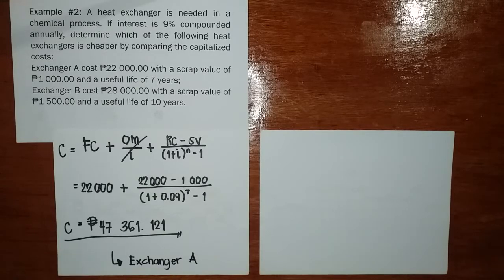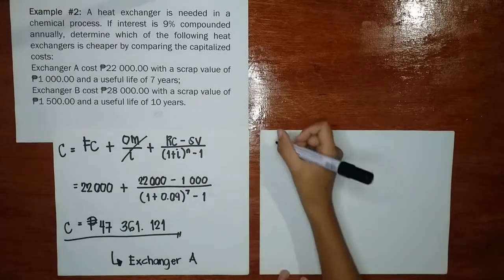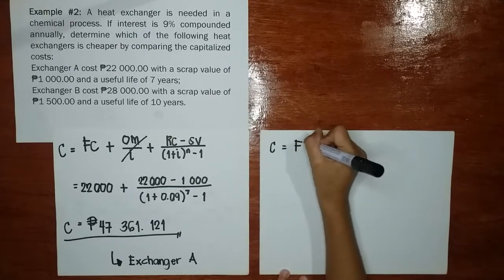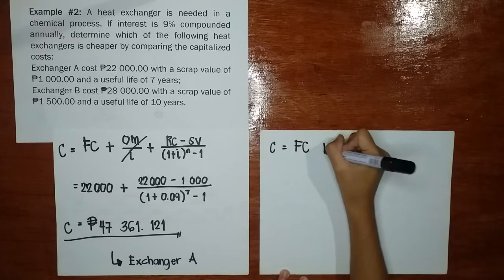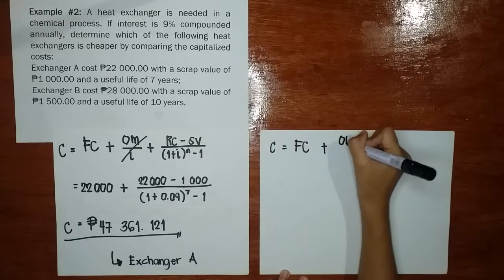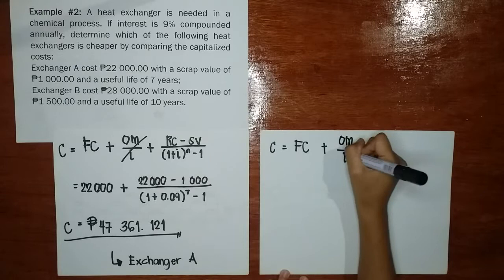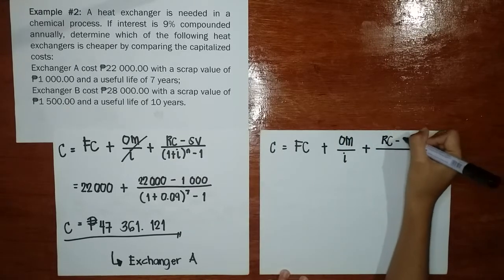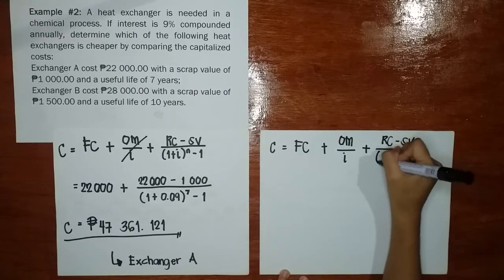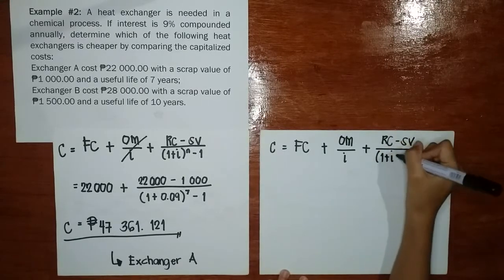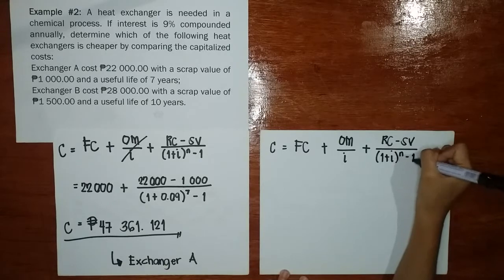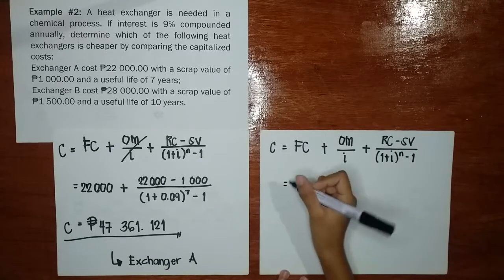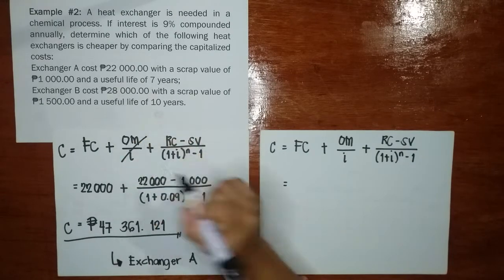So for exchanger B, gagamitin din natin itong formula na ito. So isulat ko lang ulit. C is equal to FC plus OM over I plus RC minus SV divided by (1 plus I) raised to N minus 1. So ilan ang ating first cost?